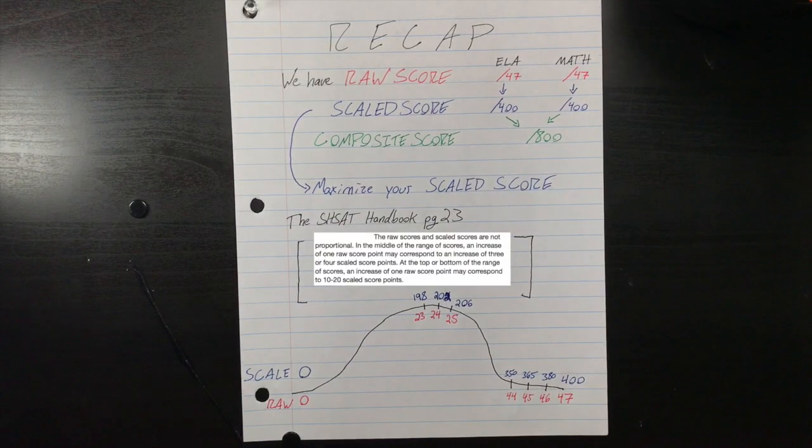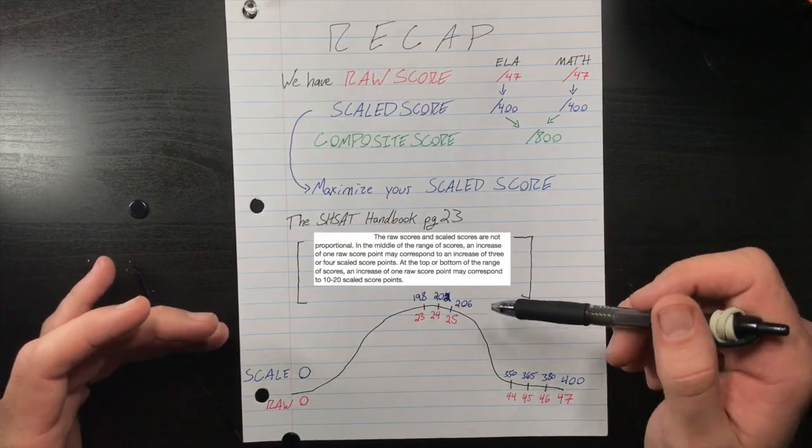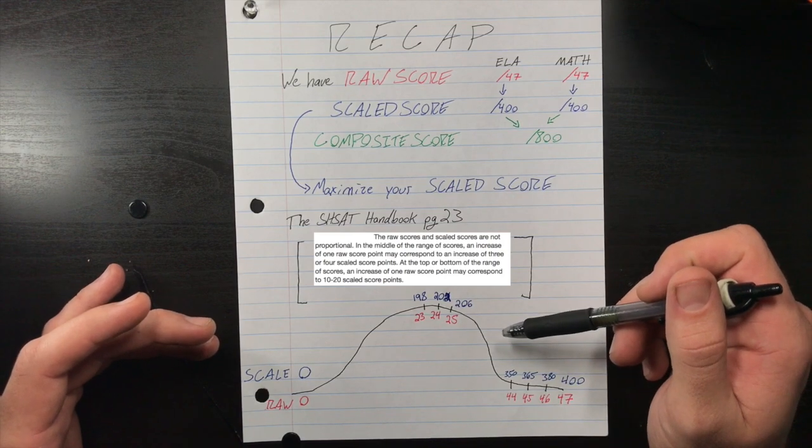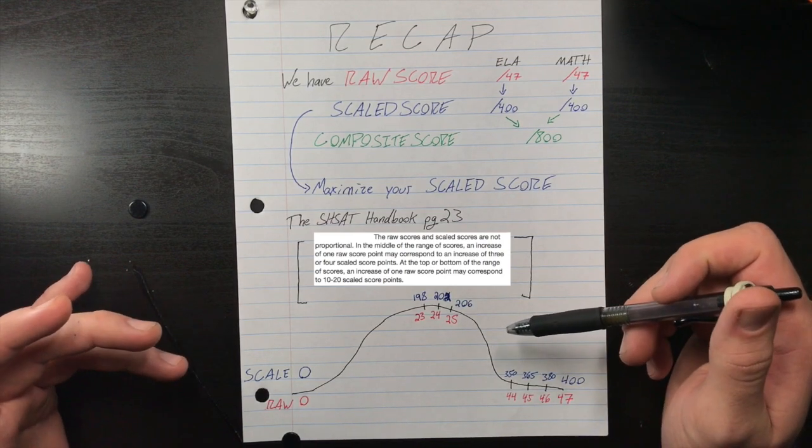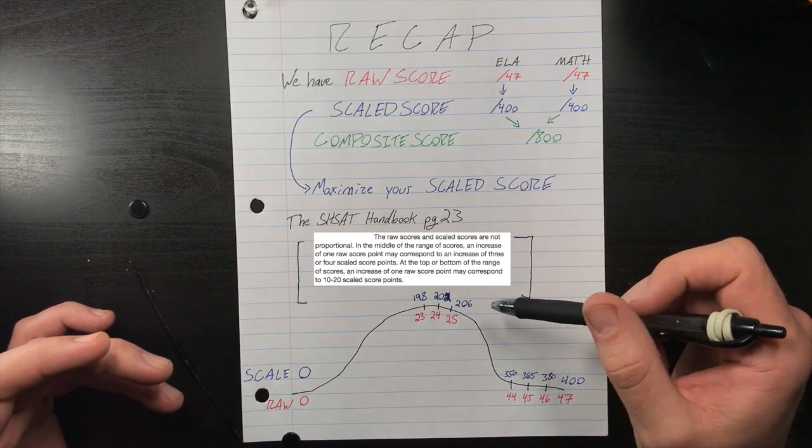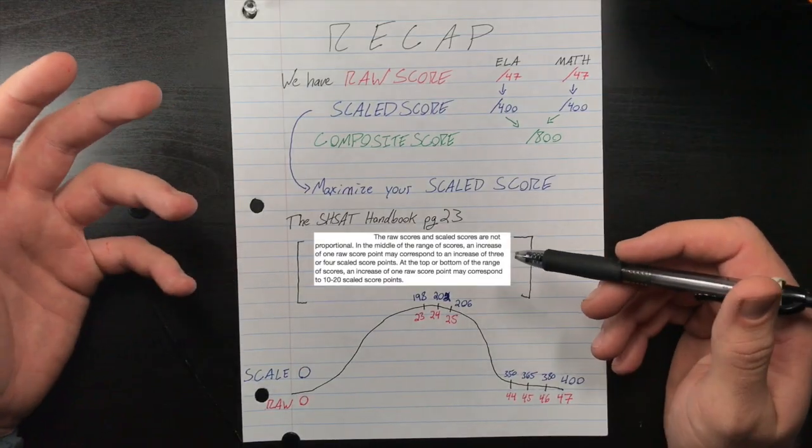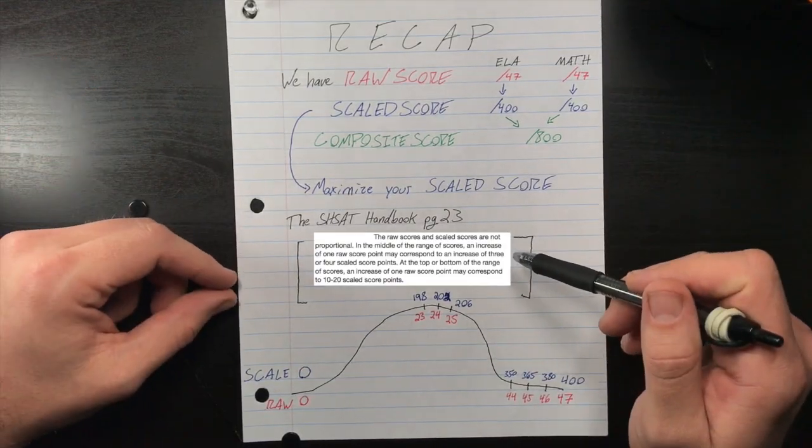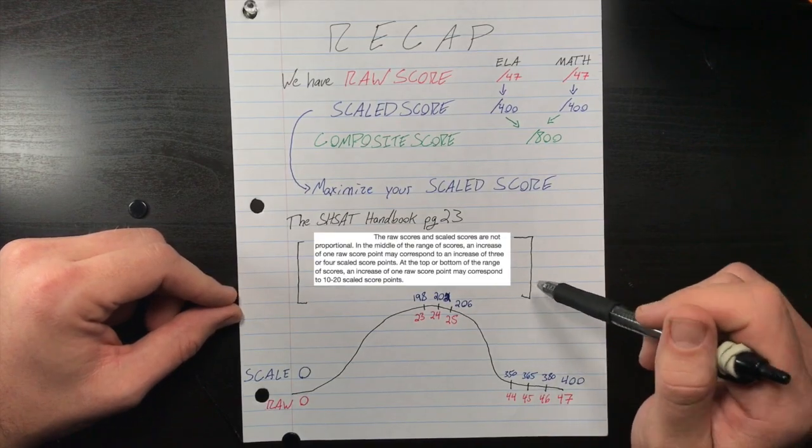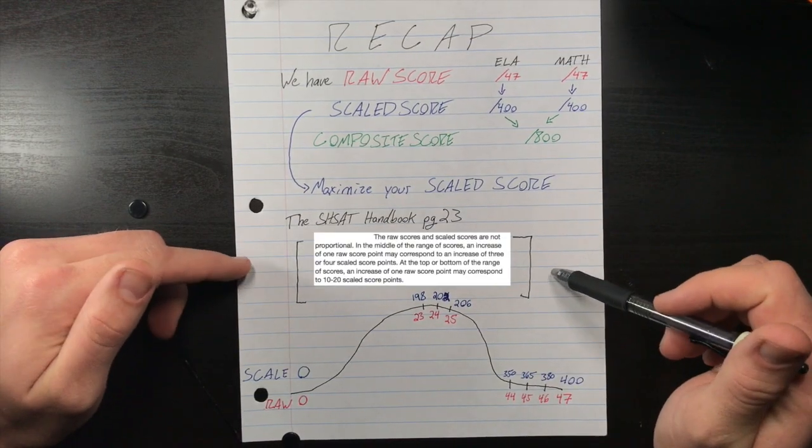Raw scores and scaled scores are not proportional. In the middle of the range of scores, an increase of one raw score point may correspond to an increase of three or four scaled score points. At the top or bottom of the range of scores, an increase of one raw score point may correspond to 10 to 20 scaled score points. This is the key to the strategy, and keep in mind this is from the city's handbook, this is public information.